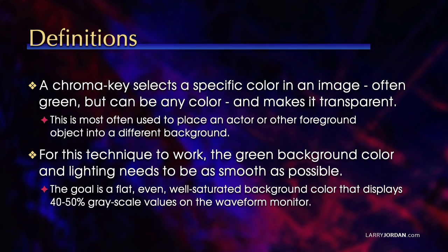A chroma key selects a specific color in an image — often green, but it can be any color — and makes it transparent. This is most often used to place an actor or other foreground object into a different background. For this technique to work, the green background color and lighting needs to be as smooth as possible. The goal is a flat, even, well-saturated background color that displays 40–50% grayscale values on the waveform monitor.